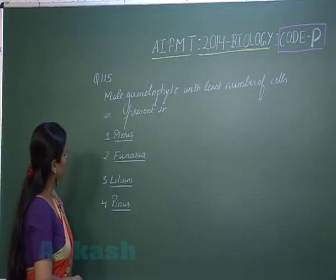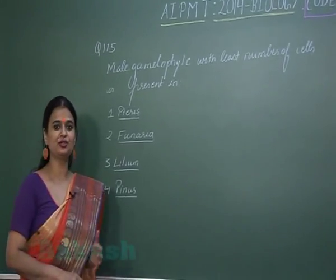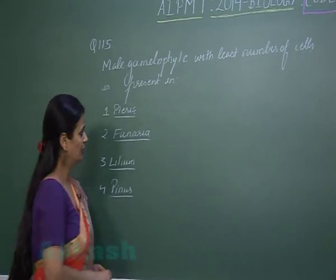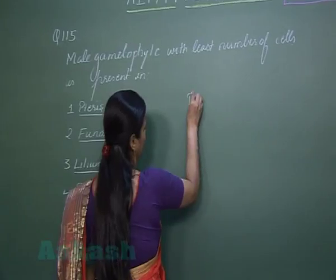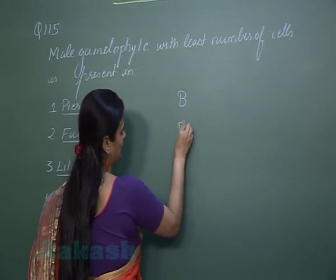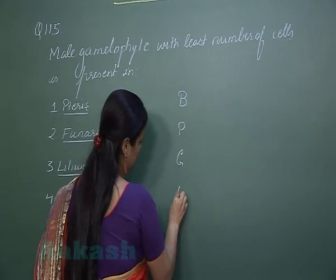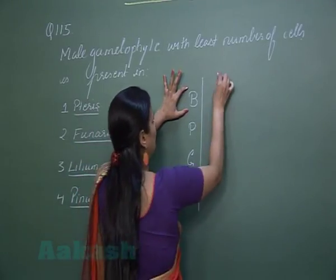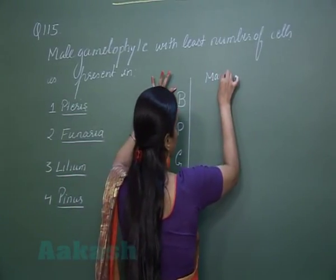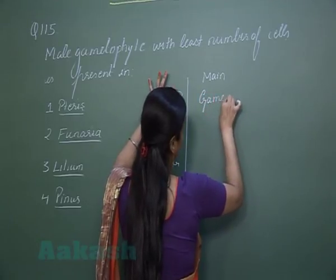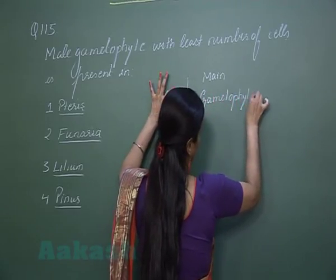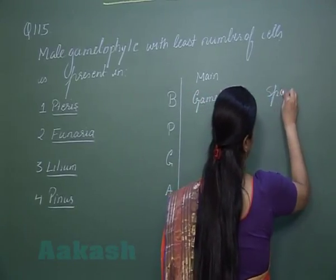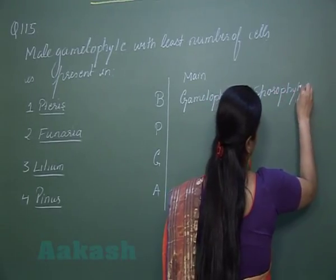In question number 115, we have to see in which of the following the male gametophyte contains the least number of cells. We can compare bryophyte, pteridophyte, gymnosperms, and angiosperms. In bryophytes, the main plant body is the gametophyte, and the sporophyte is dependent.